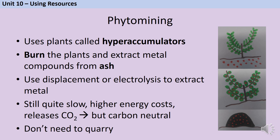Phytomining is still quite a slow process because you have to wait for the plants to grow and absorb the metal from the soil. It has higher energy costs than bioleaching because of the stage where you burn the plants. It does release carbon dioxide, but we can describe the process as carbon neutral. That means that even though CO2 is released at the end, the plants absorbed that same CO2 from the atmosphere during photosynthesis. Unlike burning fossil fuels - where carbon sequestered for millions of years is released - this is carbon that was in the atmosphere maybe a year ago. Another advantage of phytomining is that you don't need to build a big quarry, which causes less environmental damage and costs much less than digging up big chunks of rock.